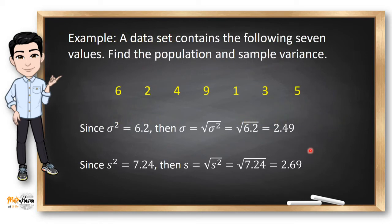In the previous example, since the population variance is 6.2, then the square root of 6.2 is 2.49. So the standard deviation for the population is 2.49. Now, if the sample variance is 7.24 in the previous example, square root of 7.24 is 2.69. So the sample standard deviation is 2.69.